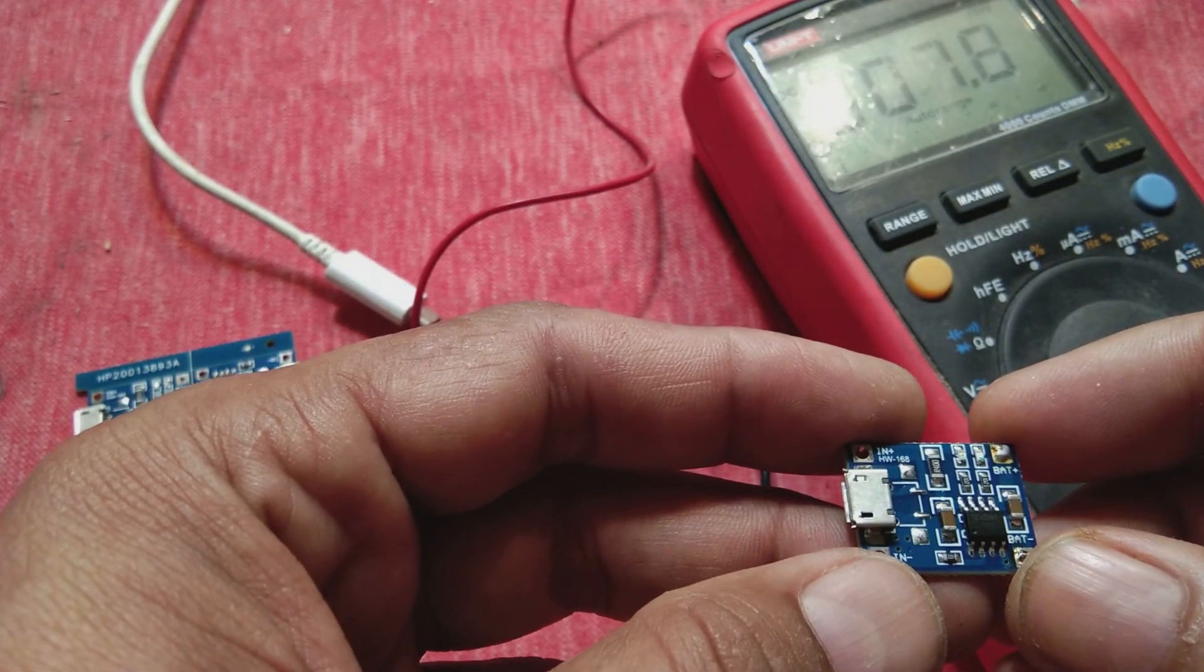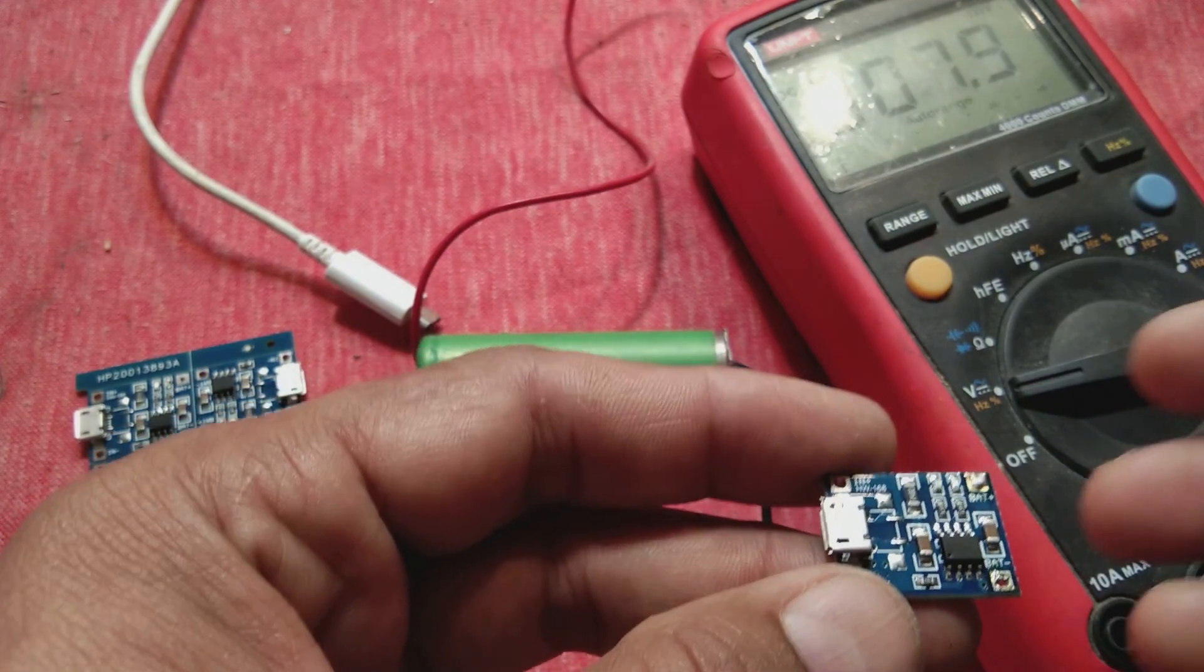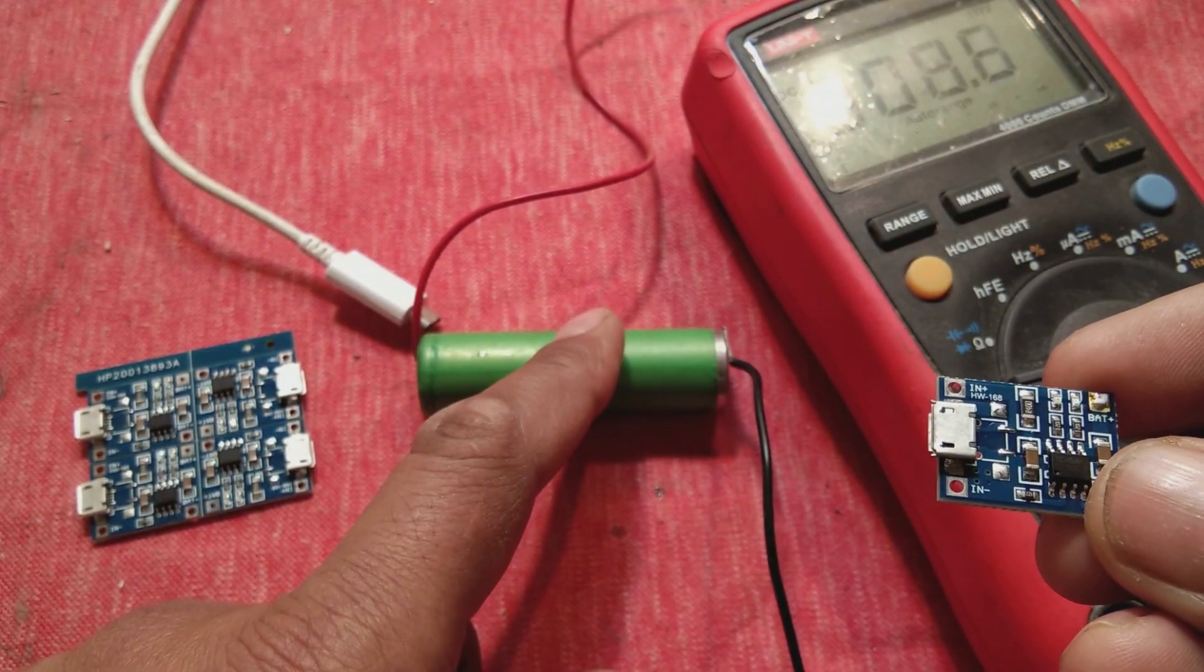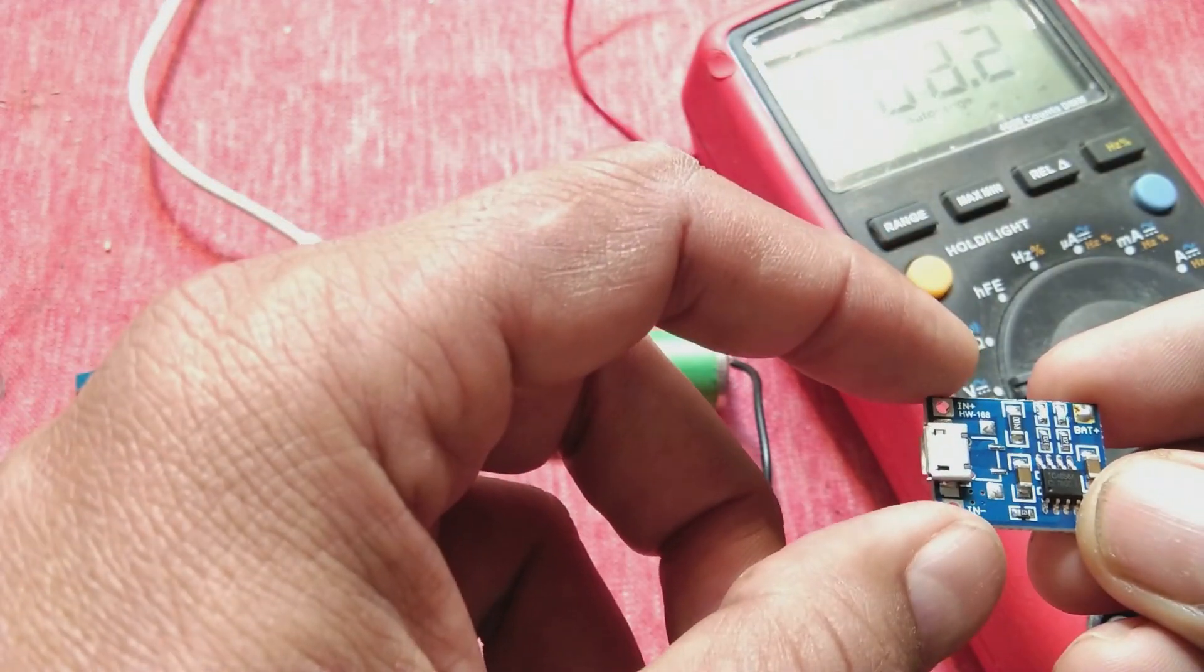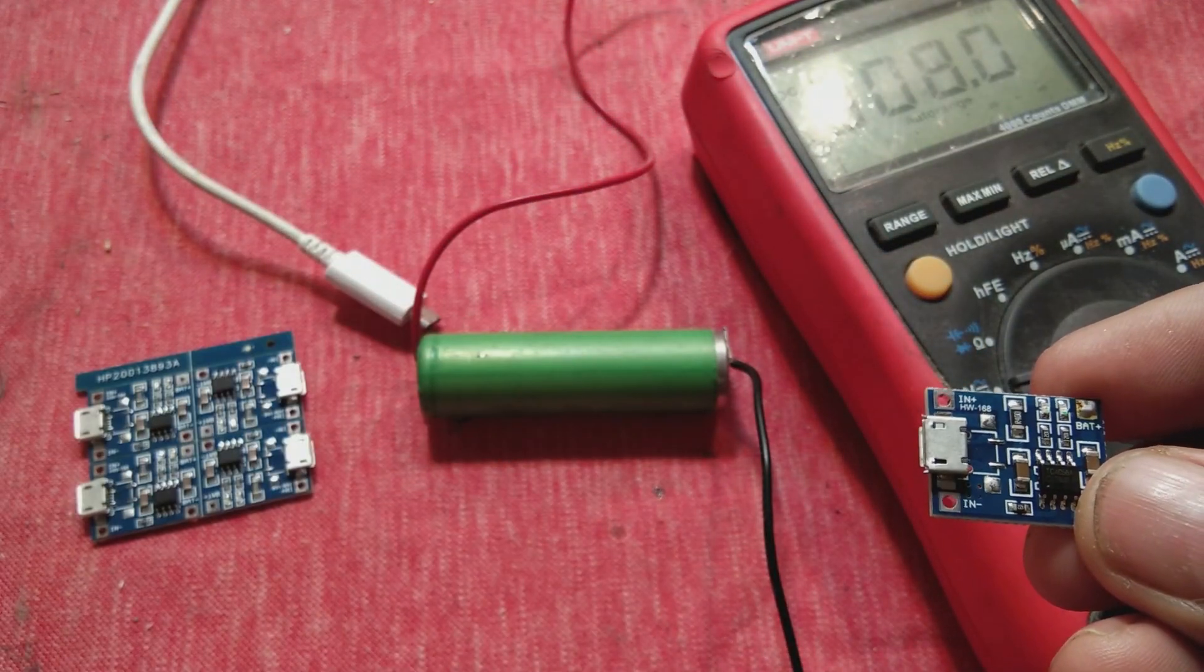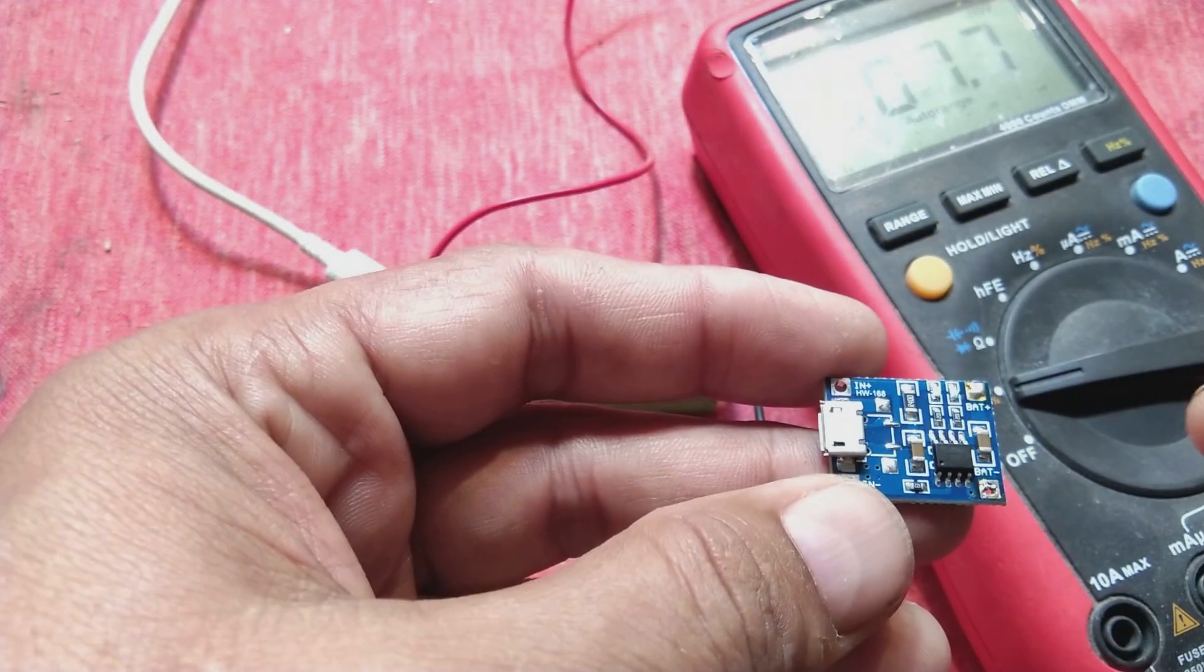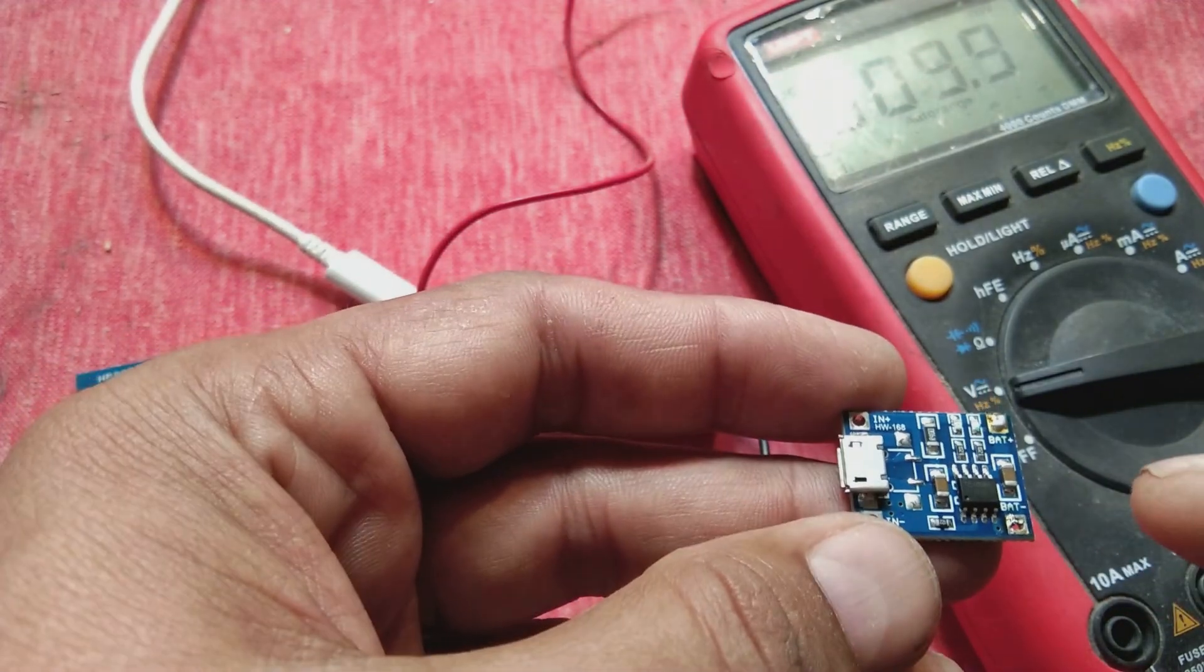There is also a cutoff - the battery will be charged up to 4.2 volts. This charger will cut off when the battery is full. I'm going to explain a little bit about this module.